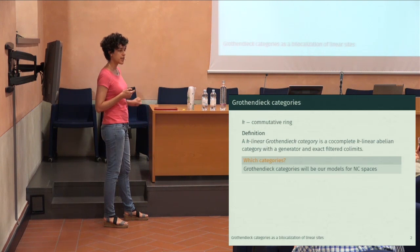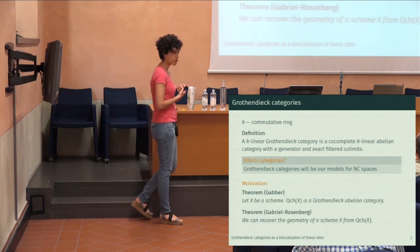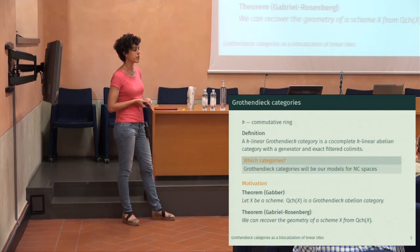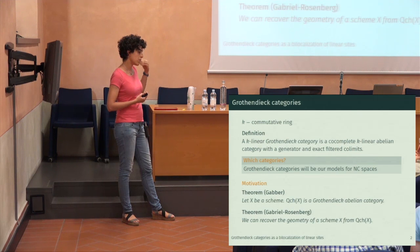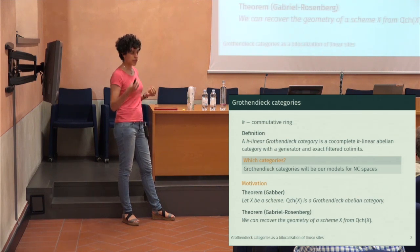Why do I pick these special categories? The motivation is, first of all, Gabriel's theorem, which says that given any scheme, its category of quasi-coherent sheaves is always Grothendieck. On the other hand, we base ourselves in reconstruction theorems, which started for Noetherian schemes with Gabriel and have been generalized. We can basically reconstruct the scheme out of its category of quasi-coherent sheaves.